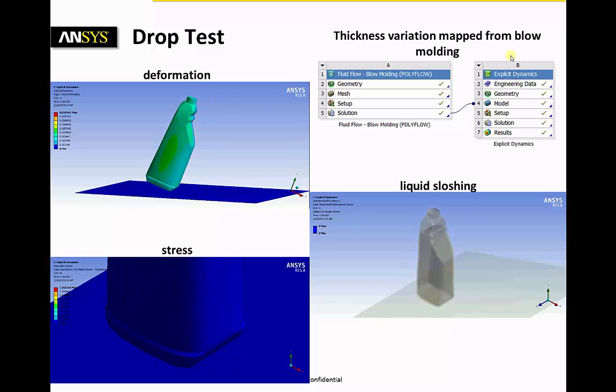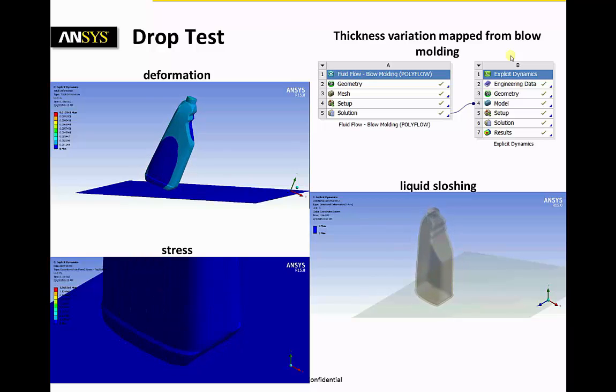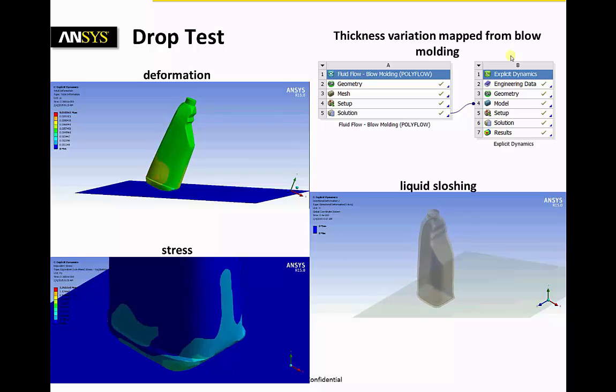Also typically, the maximum deformation and stresses are of interest. Under this drop test configuration, optimizing the bottle thickness and increasing the minimum value of that thickness proved to be crucial in reaching a design that passed the drop test requirement.